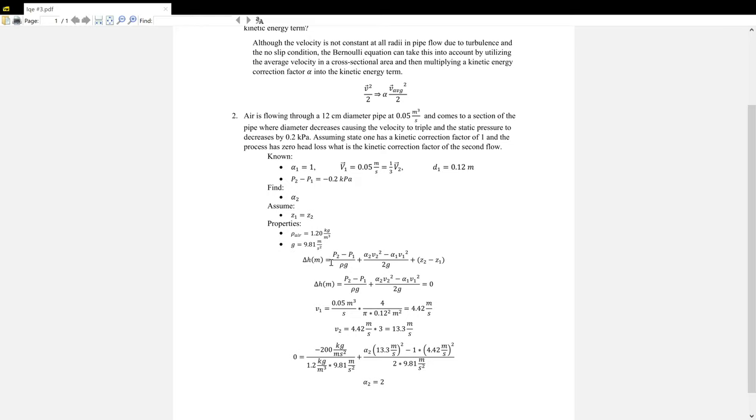We can start out with the general Bernoulli equation, but switched around, so that's state two minus state one. Delta H equals P2 minus P1 over rho G, plus the kinetic energy term, plus the height change term. We can get rid of the height change because Z1 equals Z2.